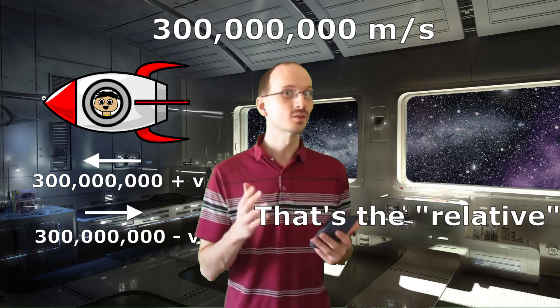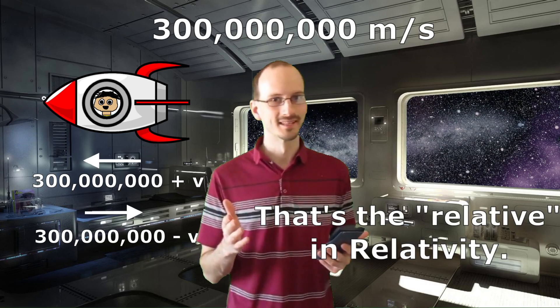No. That's the relative in relativity. We all measure the speed of light to be constant relative to us, but everything else changes. Lengths change. Time changes. Even mass changes. All these changes happen just perfectly so that the speed of light remains constant.